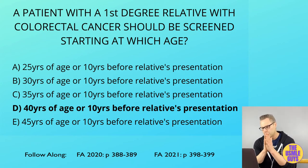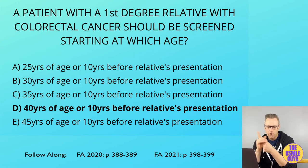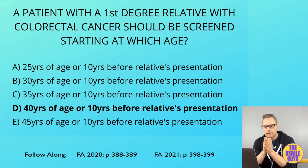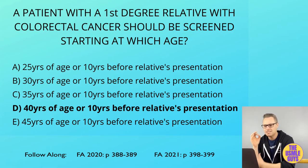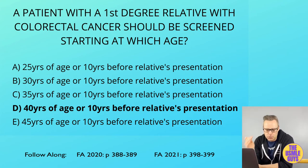One of the classic exam vignette findings is the barium X-ray finding — the classic apple core lesion. Also, they like to ask about the CEA tumor marker; don't forget this is used to monitor the recurrence of cancer or progress with treatment, but it is not a screening tool.